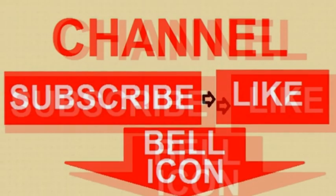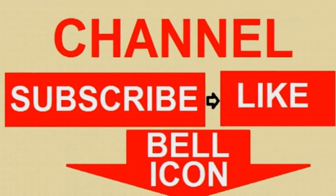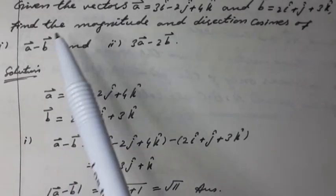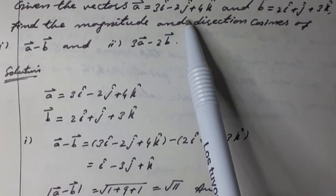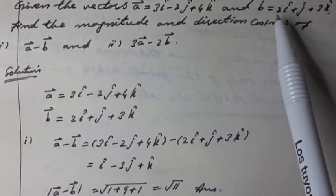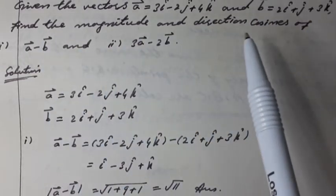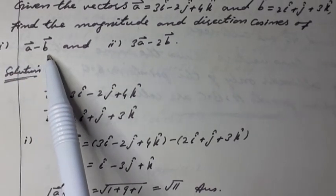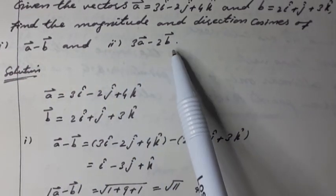Given the vectors: a vector is equal to 3i unit vector minus 2j unit vector plus 4k unit vector, and b vector is equal to 2i unit vector plus j unit vector plus 3k unit vector. Find the magnitude and direction cosines of: first part, a vector minus b vector, and second part, 3a vector minus 2b vector.